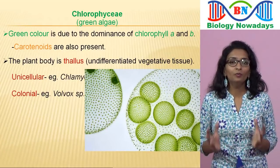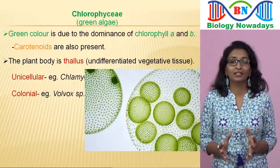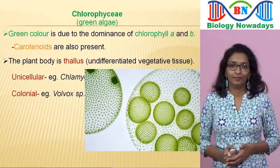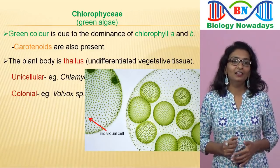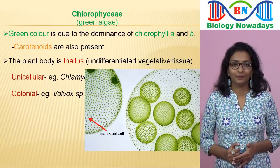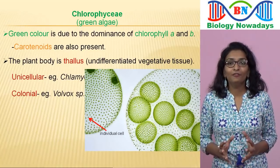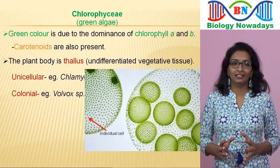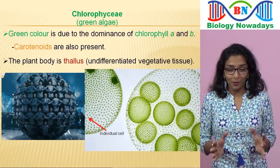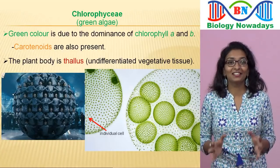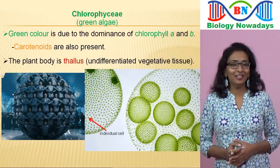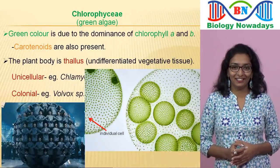Volvox is a hollow ball of 500 to 50,000 Chlamydomonas-like cells. Each of these tiny green dots is a unicellular alga — they aggregate and form multicellular colonies. It's somewhat like the giant robot ball formed by hundreds of robots in the movie Endiran; if you have watched that movie, I think you will never forget Volvox again.